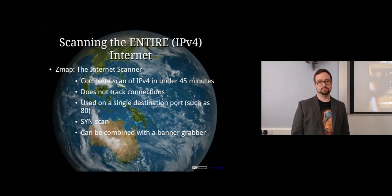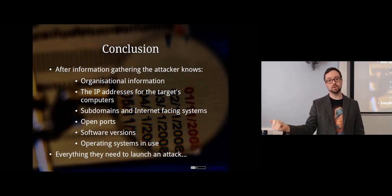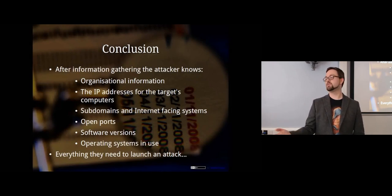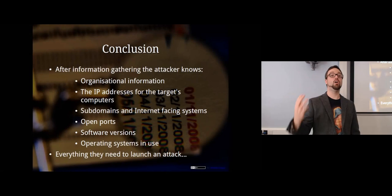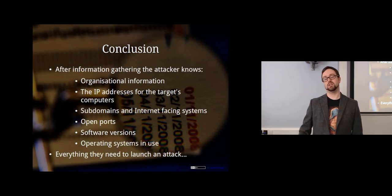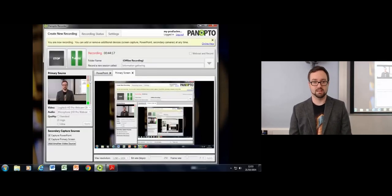In conclusion, after all of this we now know: information about the organization we want to attack, IP addresses of computers we might attack, subdomains giving us more IP addresses, open ports and different ways to communicate with the computer, what software and what version is running, and what operating system they're running. At this stage we know everything needed to launch an attack — that's how you go from knowing nothing about a system to being ready to attack it.